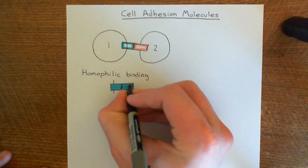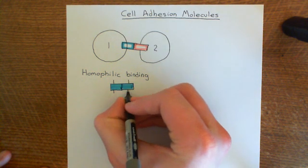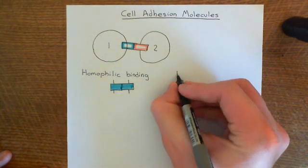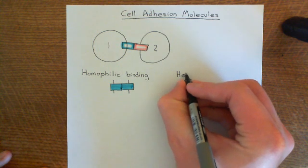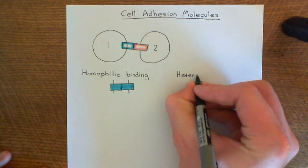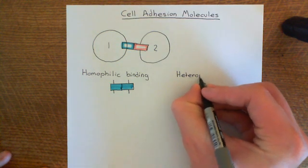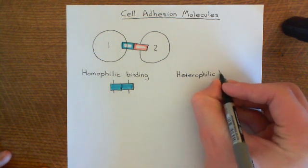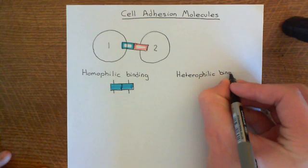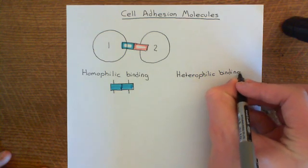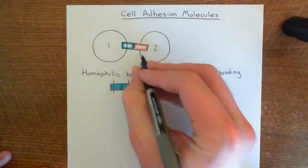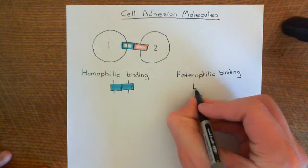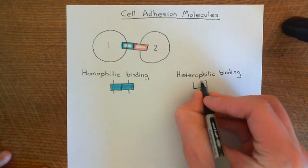Here's the cell membrane of cell 1, and here's the cell membrane of cell 2. So this is homophilic binding. And then there is heterophilic binding. Homo means the same, hetero means different. Heterophilic binding means when you've got two cell adhesion molecules bound together and the two cell adhesion molecules are not the same.